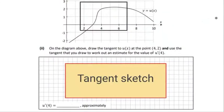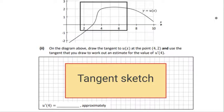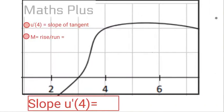On to the last part. What we need to do is on the diagram above, sketch a tangent. From that, we need to get u dash of 4, which is the slope at 4. We're going to look at the dimensions of the opposite and the adjacent of the triangle after the sketch to get the slope.